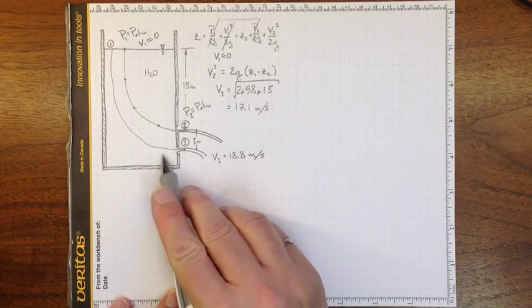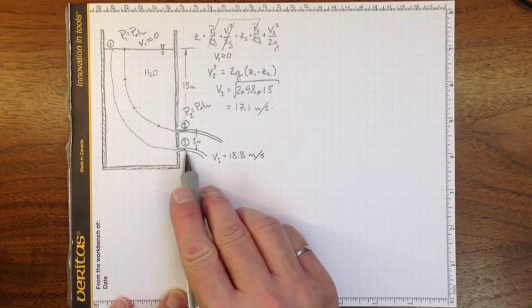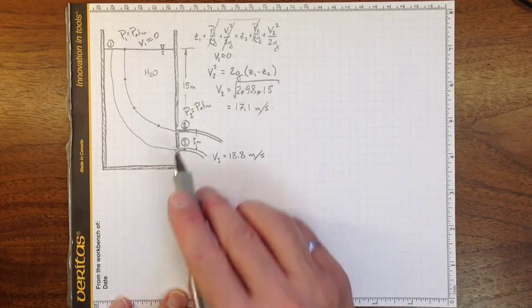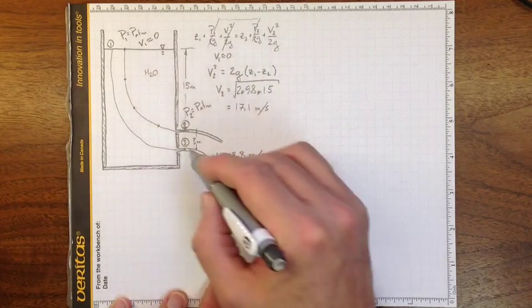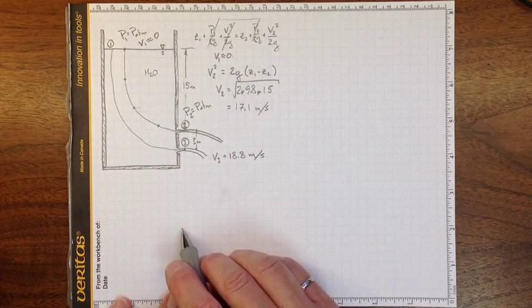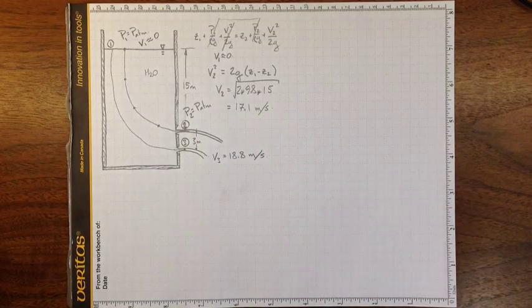So that's how you can figure out the speed at which a flow will come out of an orifice if you neglect friction. And in this case, neglecting friction is a pretty good approximation.